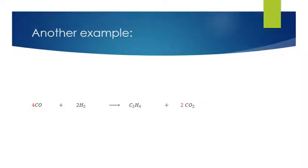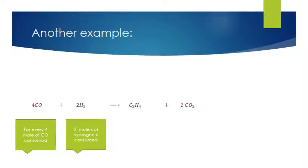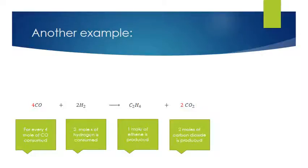Here's another example where we have CO and hydrogen producing ethene and CO2. This reaction tells us that for every four moles of CO we consume, we also consume two moles of hydrogen, we produce one mole of ethene and two moles of carbon dioxide.